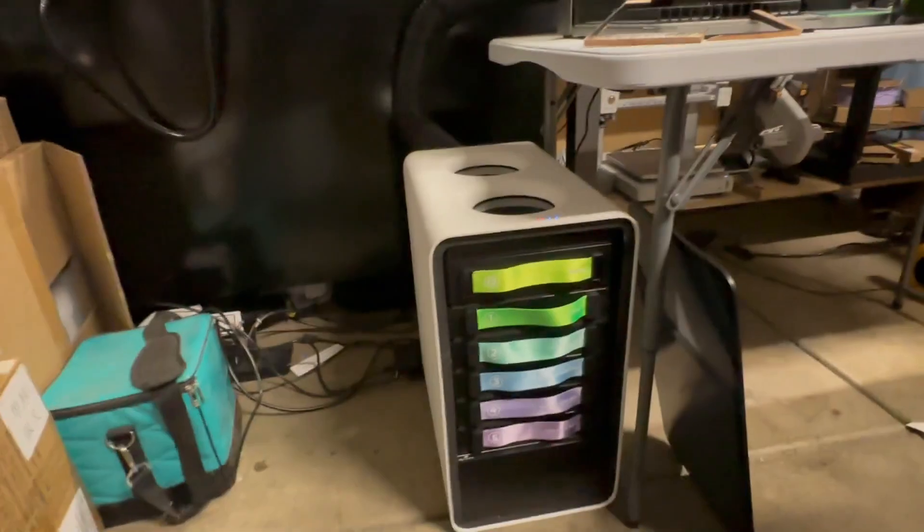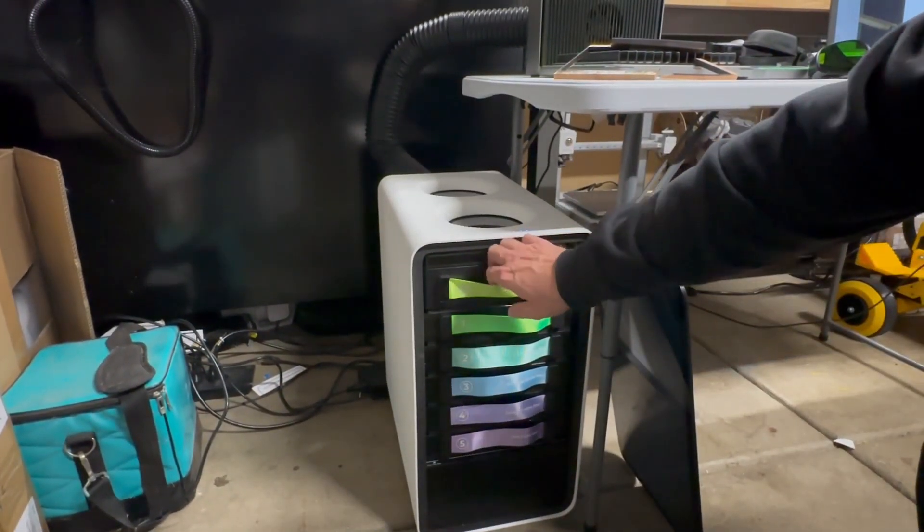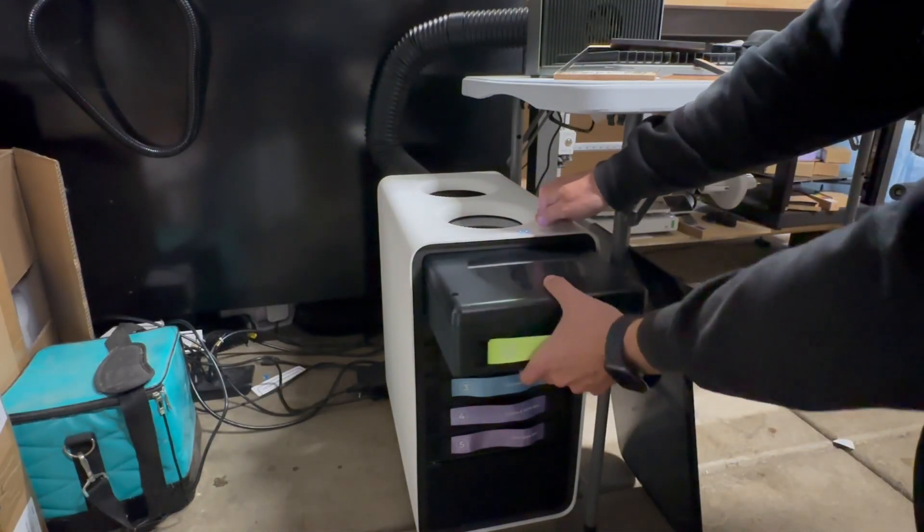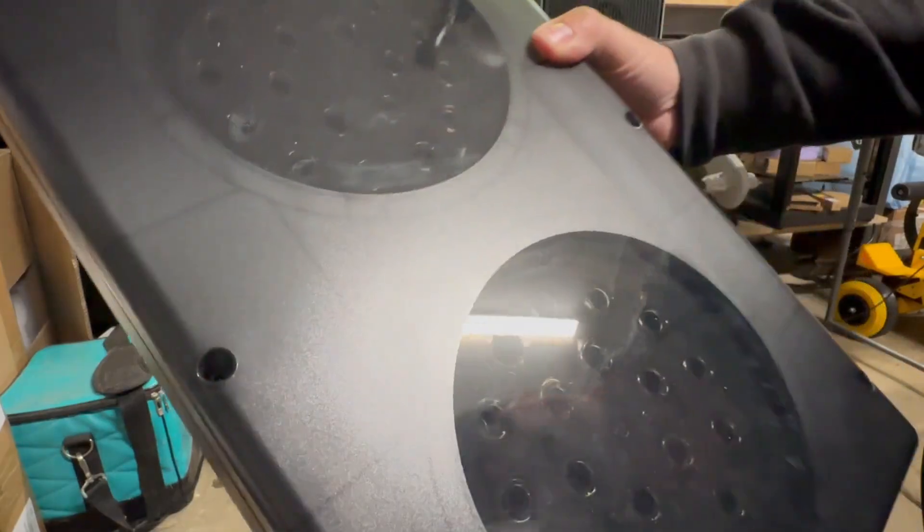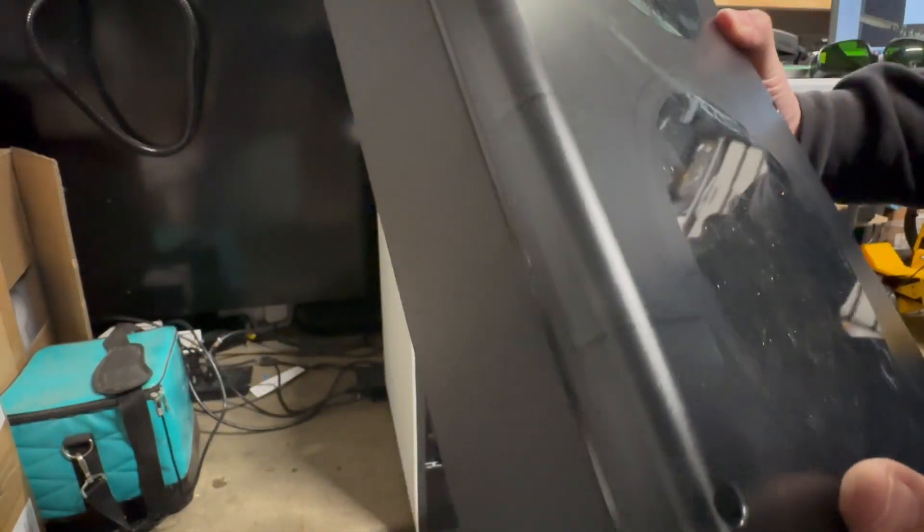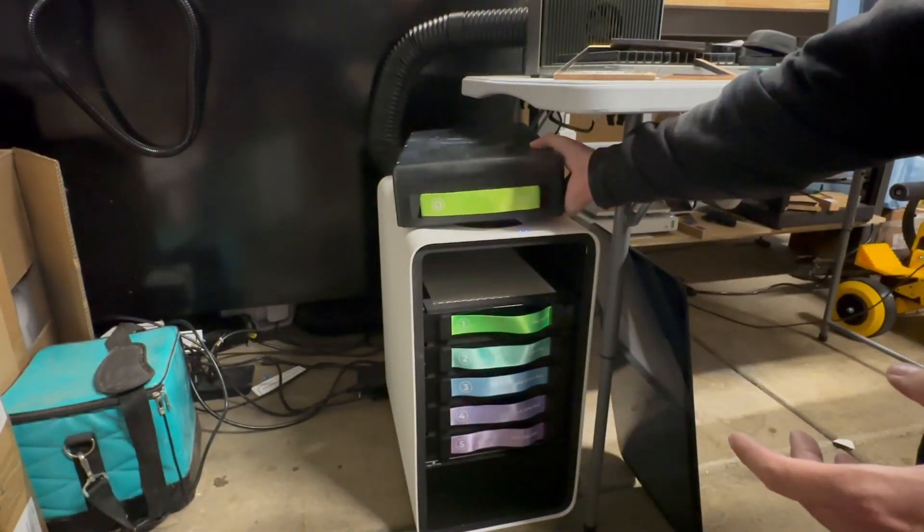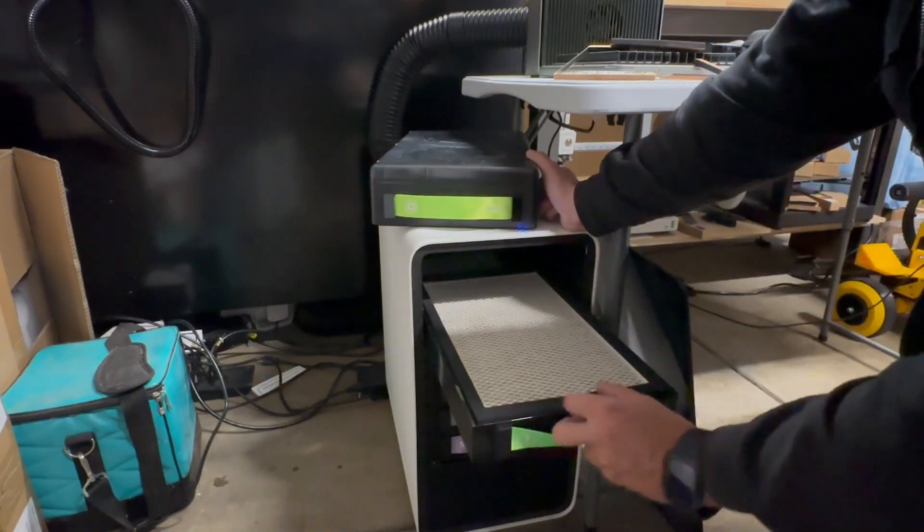And again, this is the cyclone right here that's going to remove the bigger particulates. And it looks rather clean. There are six screws that you will need to remove when you clean this underwater. And you want to make sure everything is bone dry before you replace it. But I'm looking at this first stage, this pre-filter. I want to see how it looks.